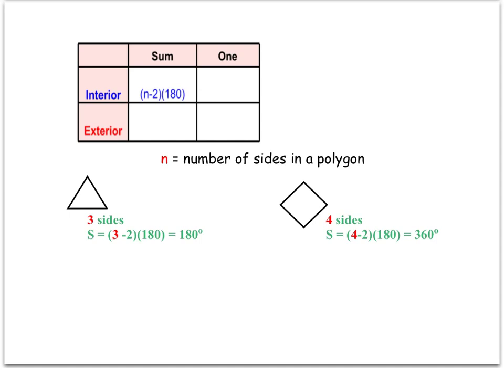You don't have to write this down, but this is just to recap. For a three-sided figure, n equals 3, we would just plug that into our formula, n minus 2 times 180. That gives us the sum of the interior angles.